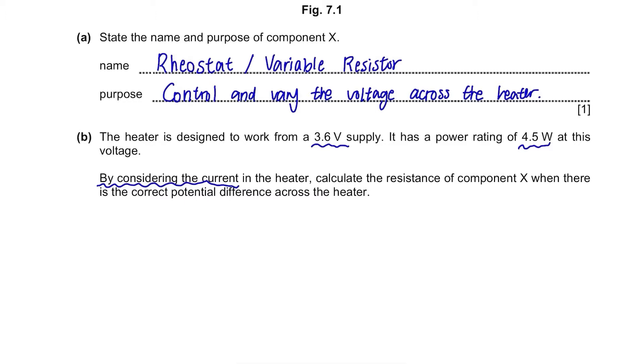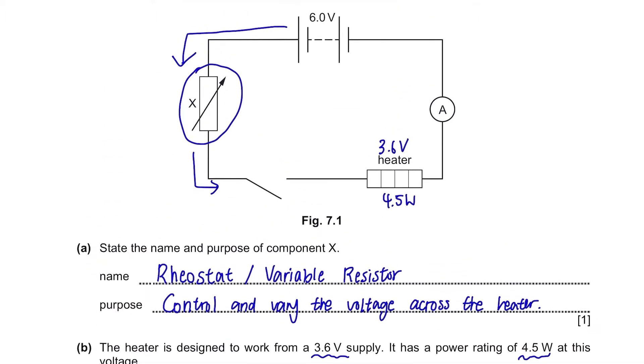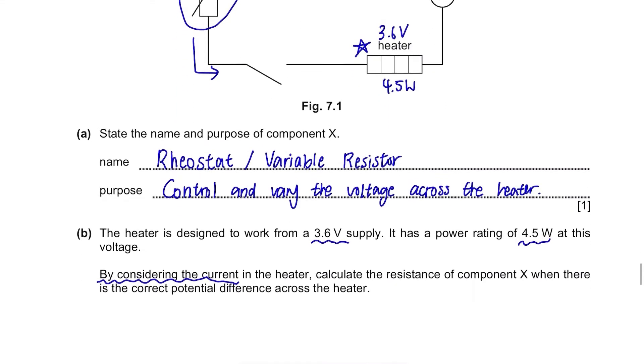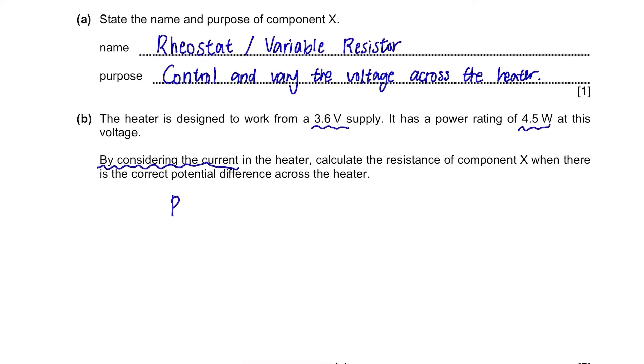Current is the same across the circuit, so we can find the current from this heater. To find the current, use the formula P equals VI, which is power equals voltage times current. So current equals power divided by voltage, and that's 4.5 divided by 3.6, which is 1.25A.